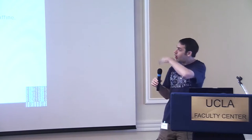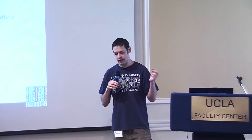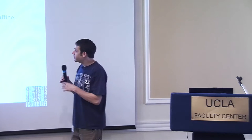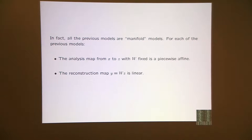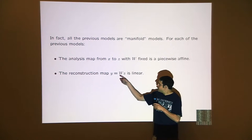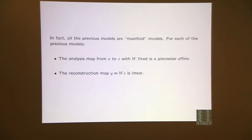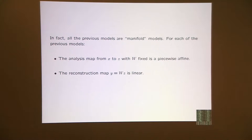If you look at all the kinds of models we've talked about — the L0 one, the L1 penalized one, all the group models — all of them have the property that the analysis map (taking an input x and finding its best code) gives a piecewise linear or piecewise affine map. The reconstruction map going back from coding space to data space is linear. What you have is a model of the data which is piecewise linear — it's a manifold in the sense you're approximating your data by a bunch of locally affine pieces.